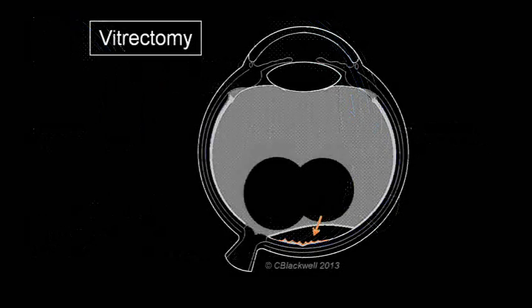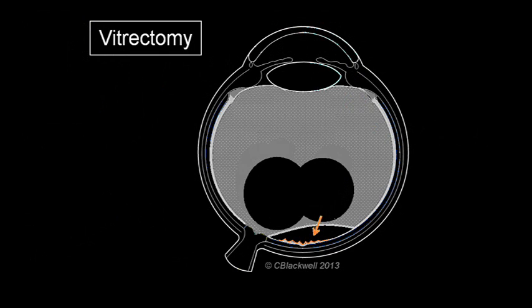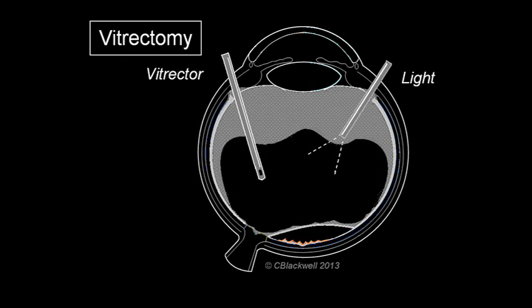In the eye with the wrinkling caused by the epiretinal membrane, once again the central vitreous is removed, allowing access to the membrane on the surface of the retina.